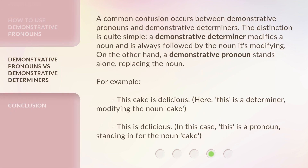A common confusion occurs between demonstrative pronouns and demonstrative determiners. The distinction is quite simple. A demonstrative determiner modifies a noun and is always followed by the noun it's modifying. On the other hand, a demonstrative pronoun stands alone, replacing the noun. For example, 'This cake is delicious' — here, 'this' is a determiner modifying the noun 'cake.' 'This is delicious' — in this case, 'this' is a pronoun, standing in for the noun 'cake.'